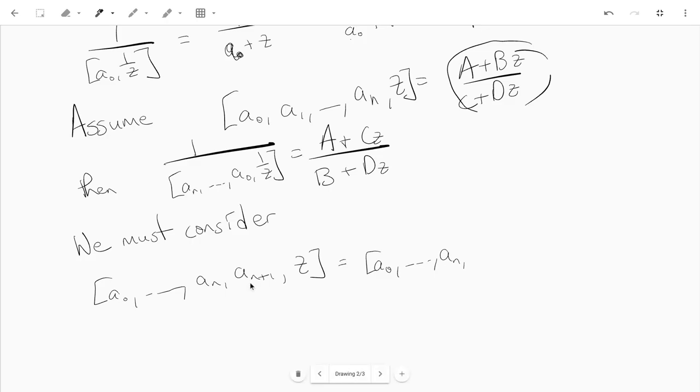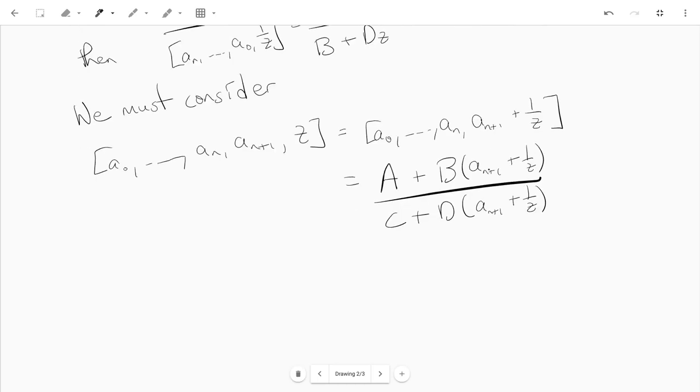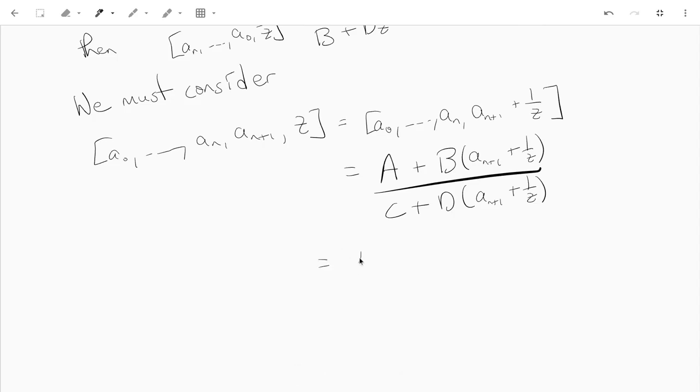So remember, we'll write a n plus 1 comma z, we'll rewrite that as a n plus 1 plus 1 over z. Now we have a formula for this. That's just a plus b times a n plus 1 plus 1 over z over c plus d a n plus 1 plus 1 over z. Now let's write it in terms of z. First let's multiply top and bottom by z. So we'll get az plus b a n plus 1 z plus b.